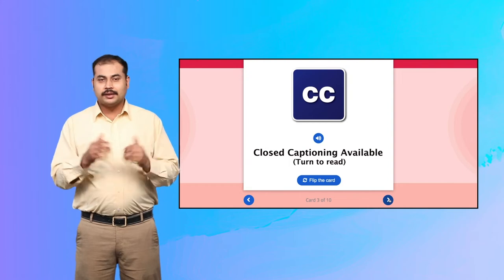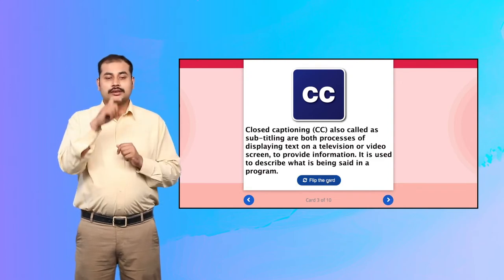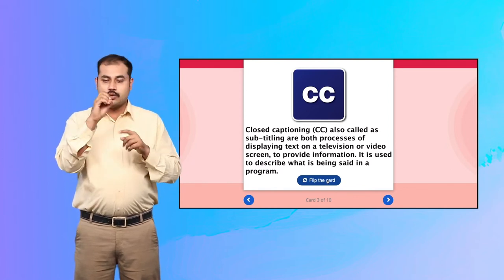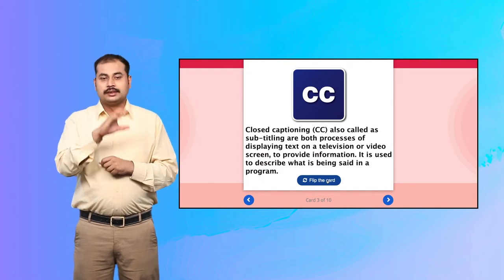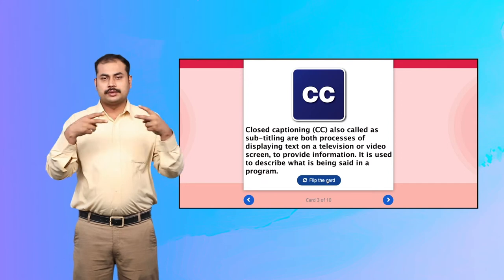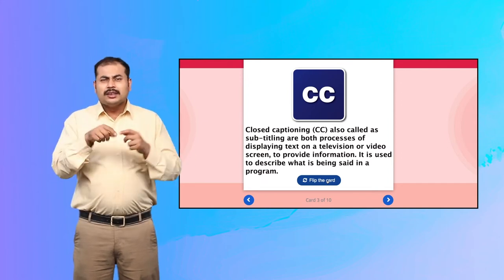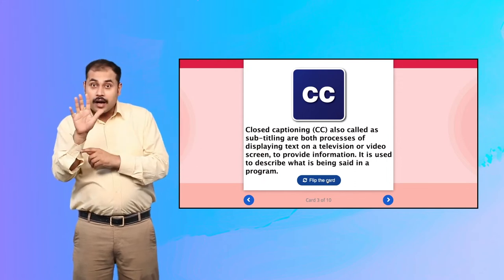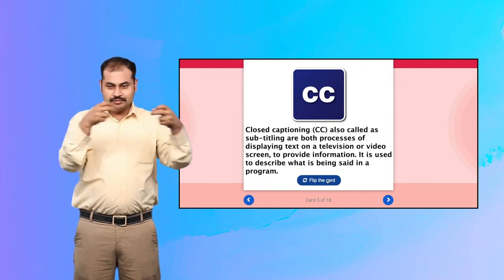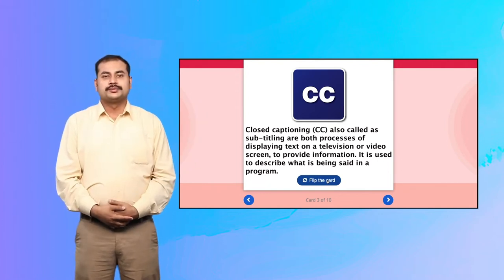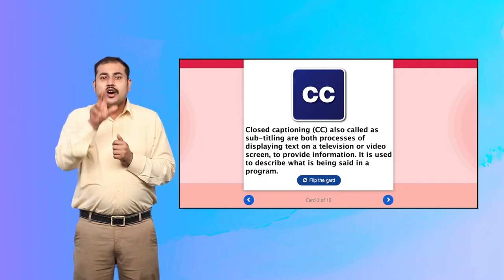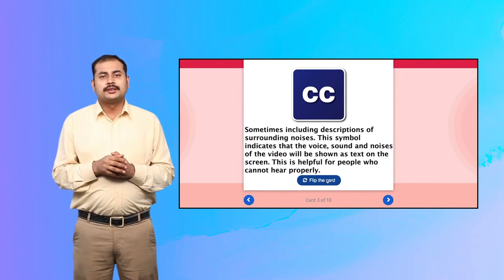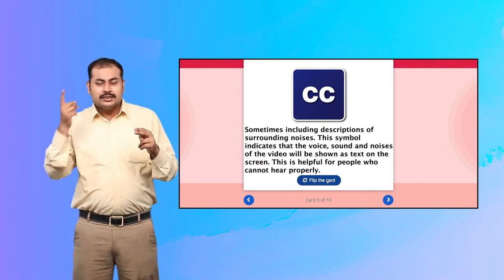Closed Captioning Available. Closed Captioning, also called subtitling, is the process of displaying text on a television or video screen to provide information. It is used to describe what is being said in a program, sometimes including descriptions of surrounding noises.